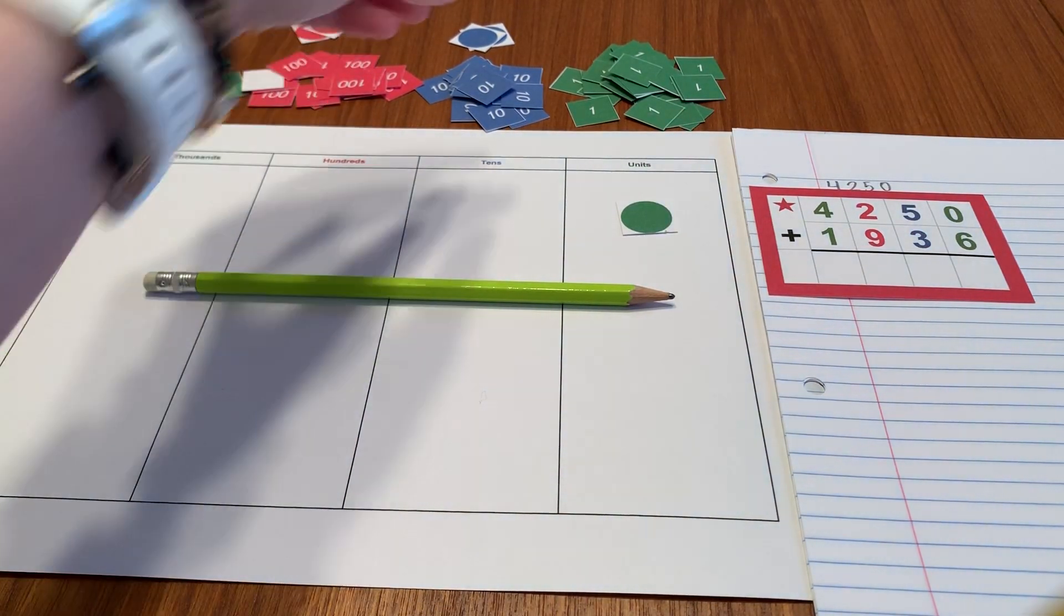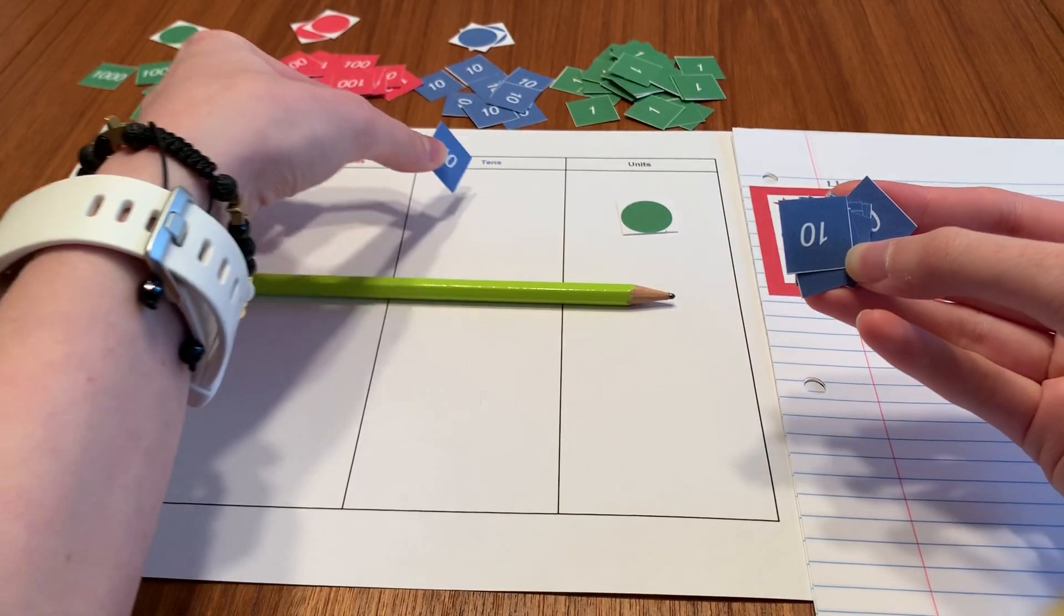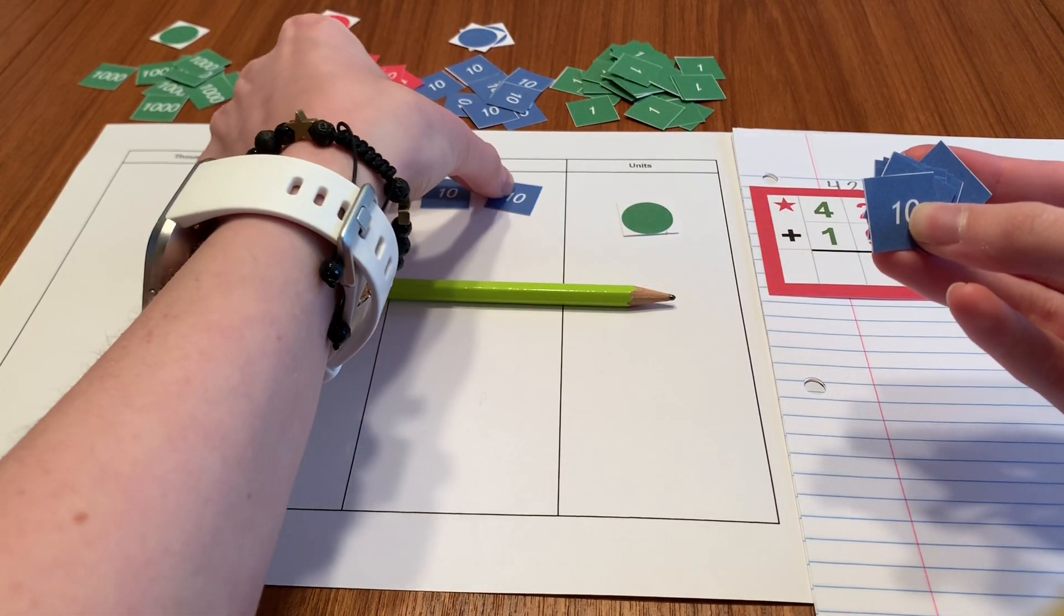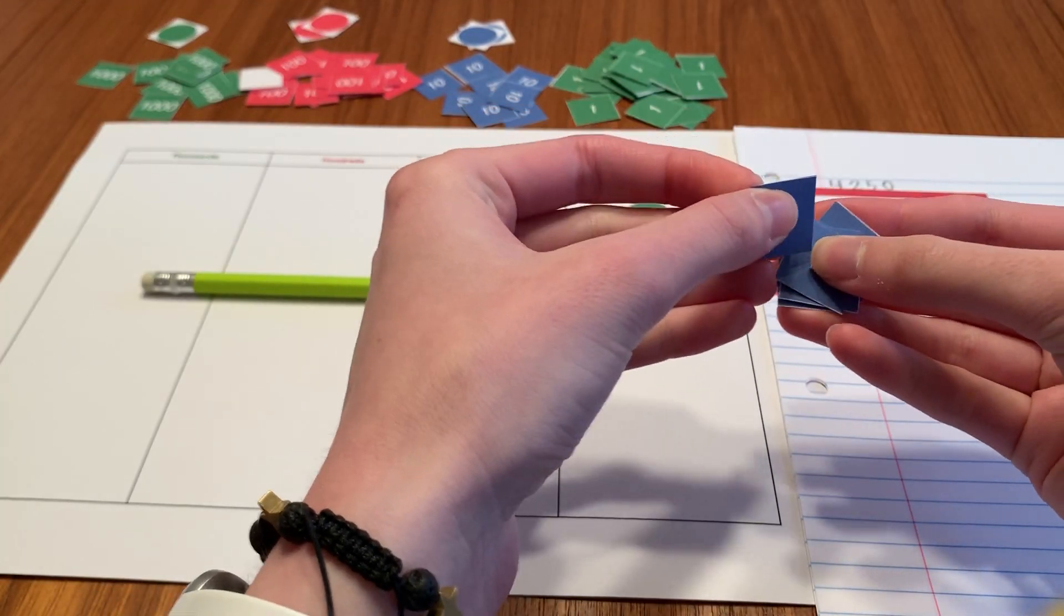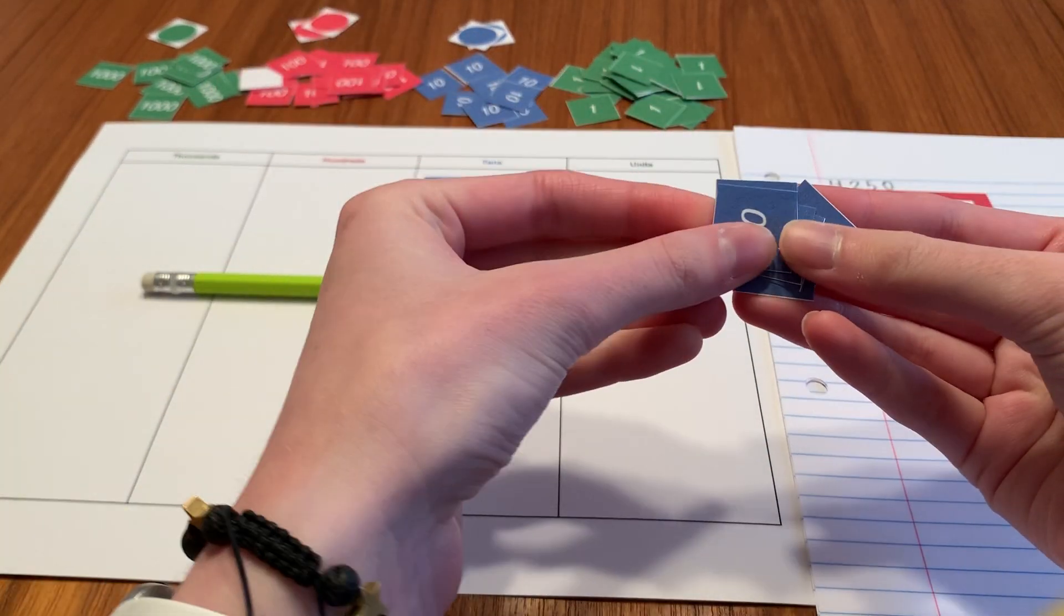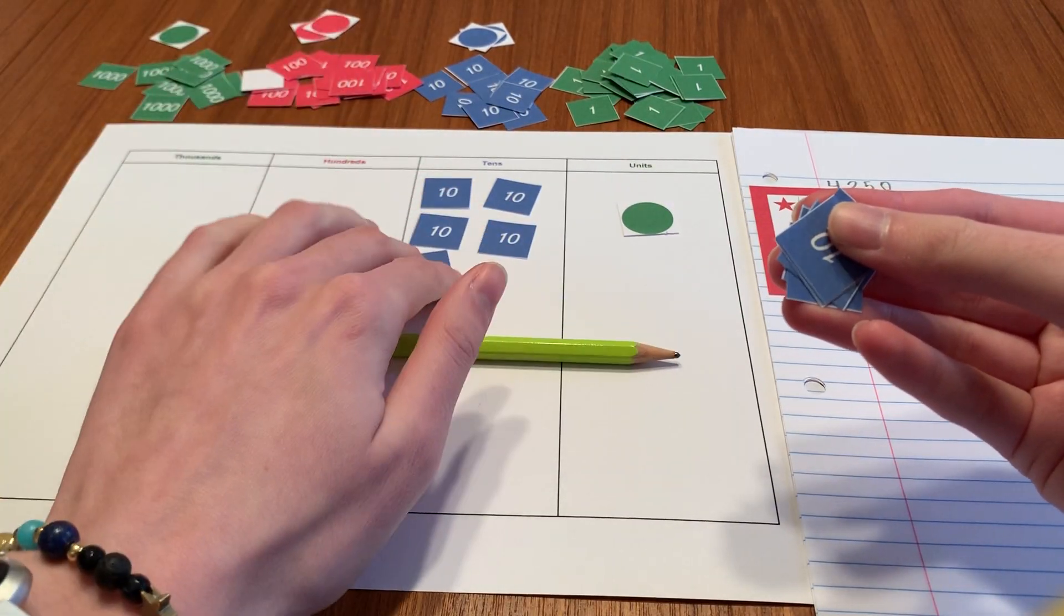Now I go to my tens. I have five tens. Five, ten, twenty. I was about to start counting by fives. Thirty, forty, and fifty. Five tens makes fifty.